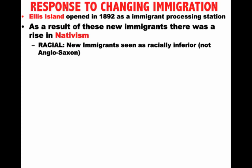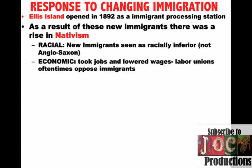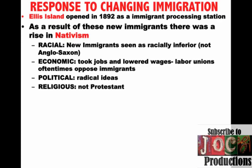There are a couple of reasons for this intense nativism. One is racial motivations — these new immigrants were seen as racially inferior, not Anglo-Saxon. There are also economic reasons: the feeling that immigrants took jobs and lowered wages. In fact, many labor unions often opposed these immigrants and would not allow them to join. There are political reasons — the perception that they're coming over with radical ideas — and religious reasons: they're not Protestant, and many people at the time viewed America as a Protestant nation. As a result, you are going to have attempts at exclusion and policies of discrimination.